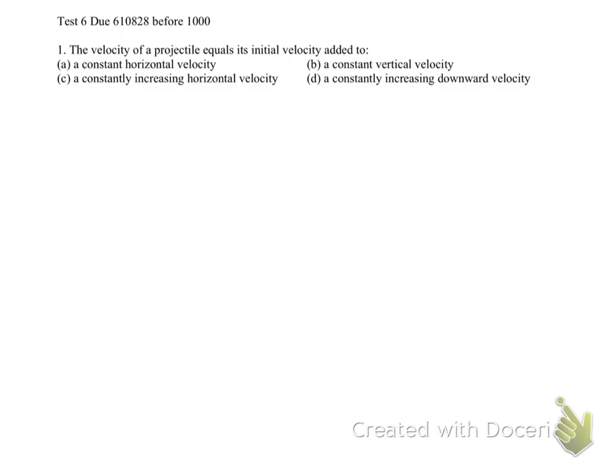Tier 6, Question number 1. The velocity of a projectile equals its initial velocity at some instant. They ask: can we write the velocity of the projectile at any instant equal to the initial velocity plus: A, a constant horizontal velocity; B, a constant vertical velocity; C, a constantly increasing horizontal velocity; or D, a constantly increasing downward velocity?